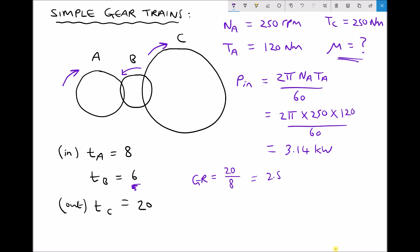And we also know that our gear ratio equals our input speed over our output speed. Therefore our output speed equals our input speed divided by our gear ratio.